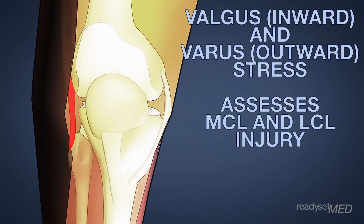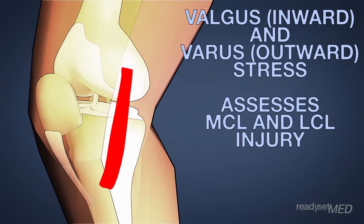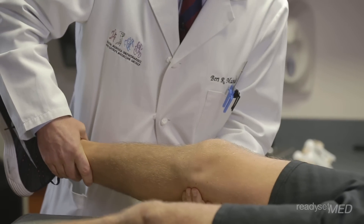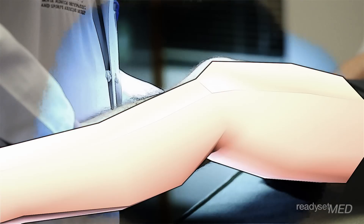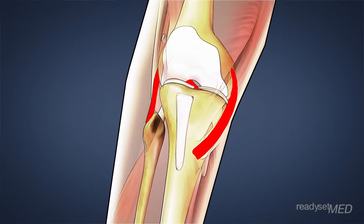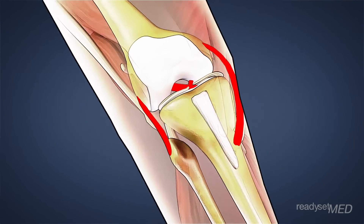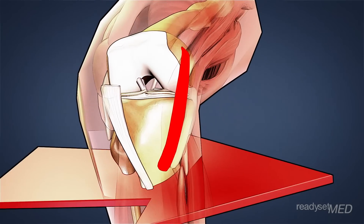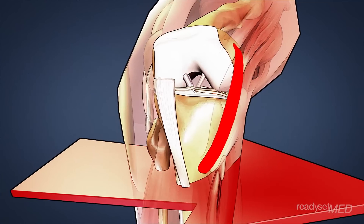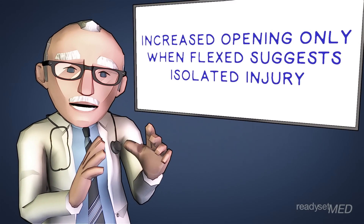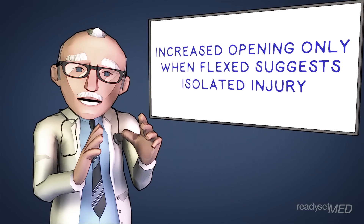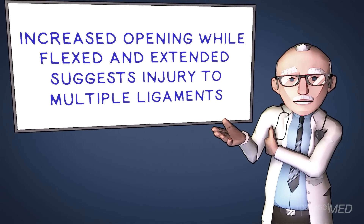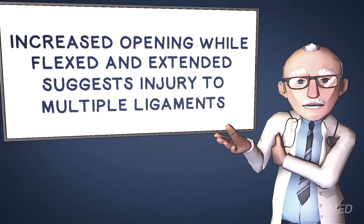The exam then moves on to the other ligaments of the knee. By applying inward or valgus stress and outward or varus stress, your doctor can assess the MCL (medial collateral ligament) and LCL (lateral collateral ligament). He applies these stresses first with the knee fully extended, then with the knee flexed to about 30 degrees. When flexed, varus or outward stress is controlled mostly by the LCL, while valgus or inward stress is controlled mostly by the MCL. Increased opening only in the flexed position suggests an isolated MCL or LCL injury, while opening in both extension and flexion suggests injuries to multiple ligaments such as the ACL and PCL.